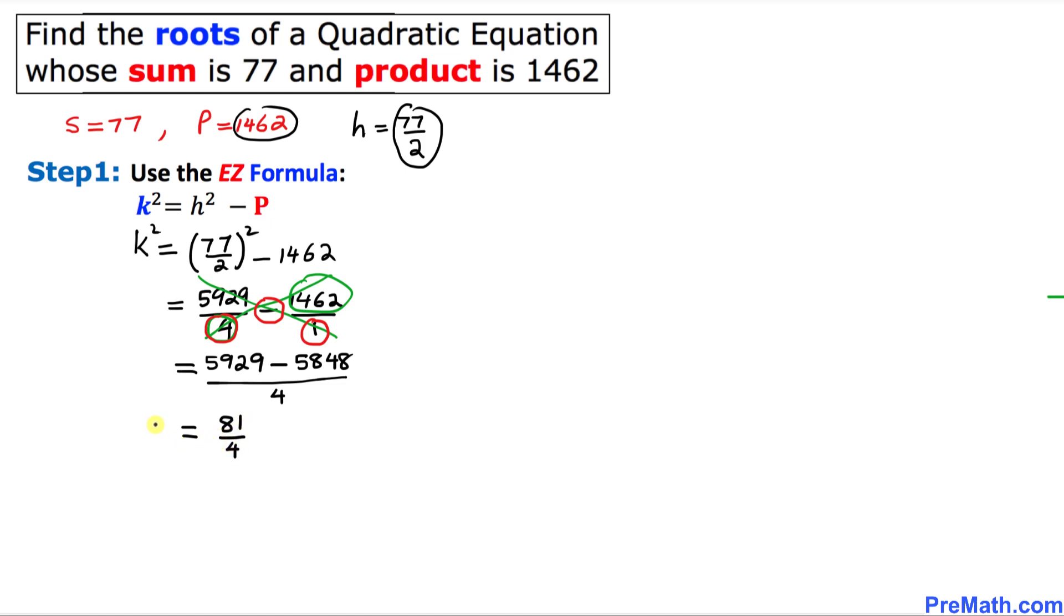Let's simplify furthermore. 5929 minus 5848 is going to give us 81 divided by 4. So that means K square turns out to be 81 over 4, and since we want to solve for K, so let's go ahead and cancel out this square by taking the square root. So we take the square root on both sides. This square and square root, they undo each other, so K turns out to be simply positive or negative 9 over 2, and this is our K value.